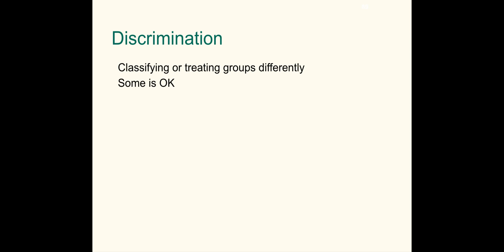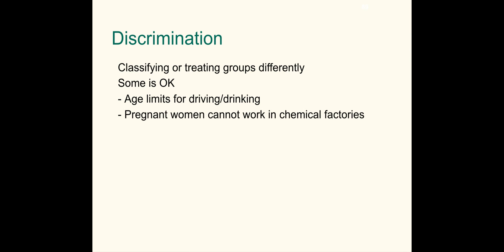Our government has said some discrimination is okay and other forms are not. For example, the government is legally allowed to put age restrictions on certain things — age limits for driving, obtaining a license, drinking, purchasing cigarettes, lottery tickets, and so on. Pregnant women are not allowed to work in chemical factories. There are also various forms of discrimination that have been deemed illegal by the courts and by legislative branches.